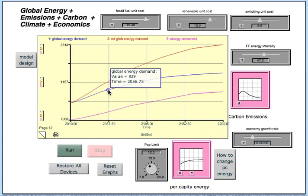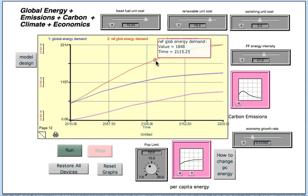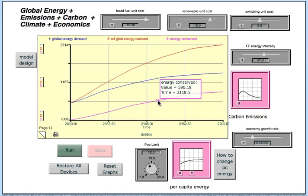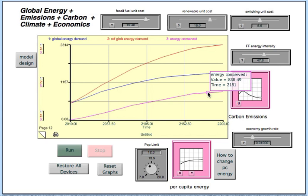And sure enough, the global energy demand is less than this reference value here. And the difference represents energy conserved. Now this energy conserved isn't free. It comes with a cost. And so later in this model, you'll see the costs that are attributed to this conservation of energy.